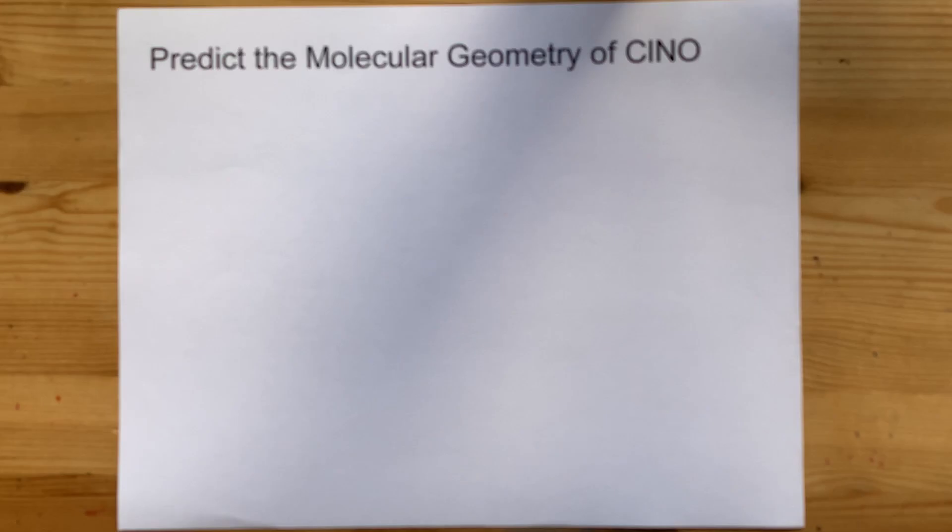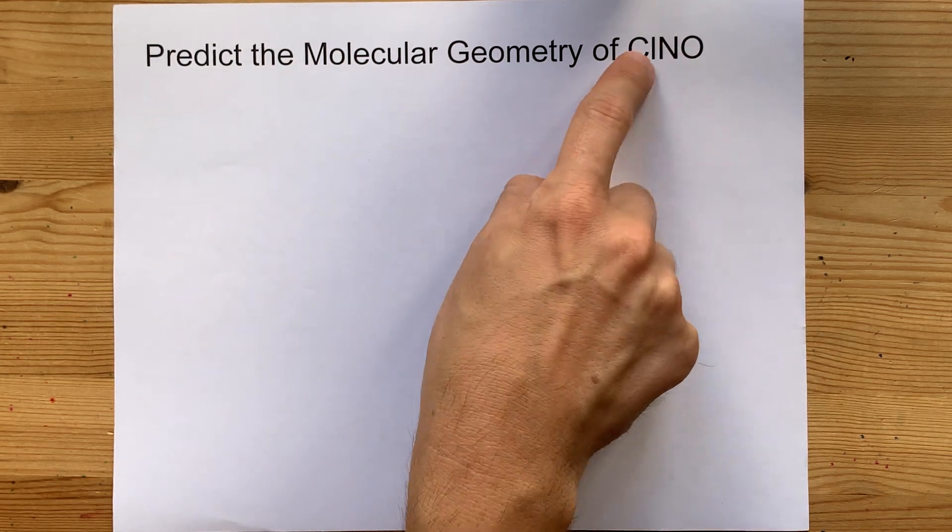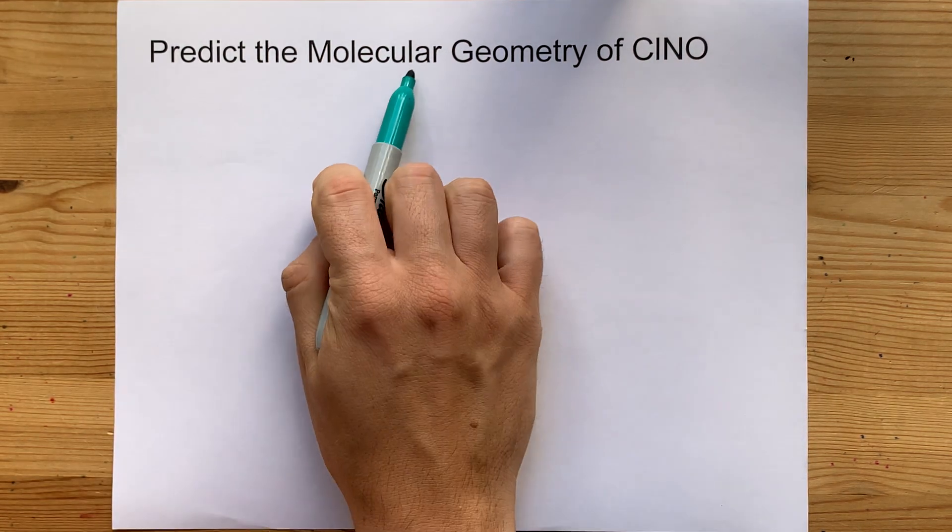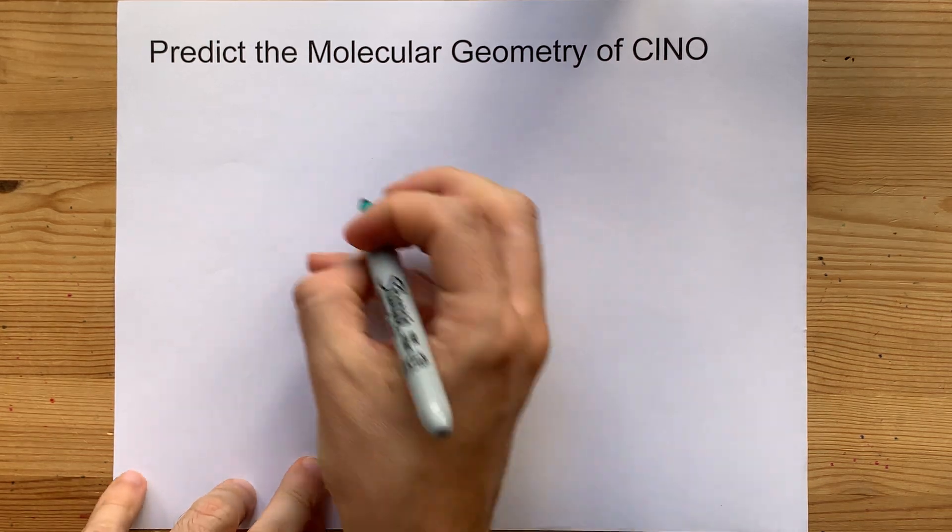Predict the molecular geometry of ClNO, or nitrosyl chloride. To predict the molecular geometry, I recommend drawing the Lewis structure.